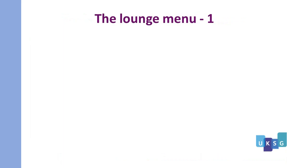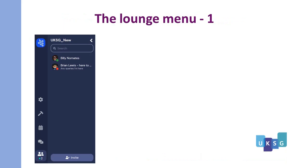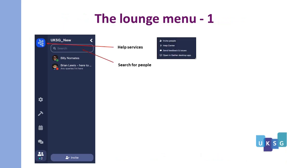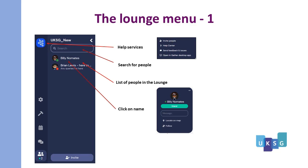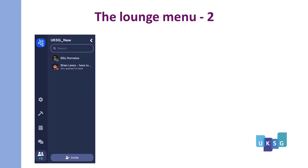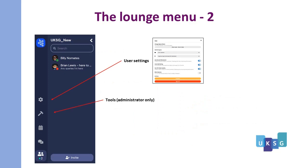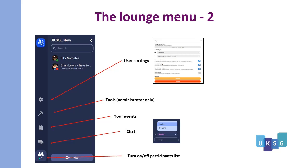Before navigating the lounge, let's look at the menu on the left hand side. One icon gives you access to the help services. A search box enables you to search for people who are already in there. There is a list of the people currently in the lounge, and if you click on a person's name you can send them a message, find where they are, or follow them around the room. Here are your user settings which you can edit. There is also a tools icon available for administrators only, a list of your events, a chat function to talk to people nearby or everybody, and a toggle for the participants list.